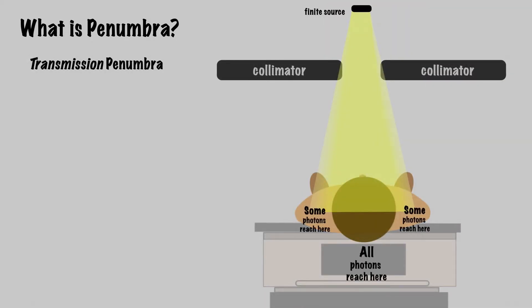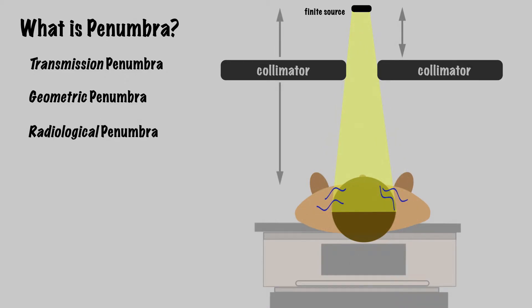The transmission penumbra through the edges of the collimators shaping the field. The geometric penumbra from the size of the radiation source, distance from the source to the collimator, and distance from the source to the skin. And the radiological penumbra from the scattering of electrons generated inside the photon field.